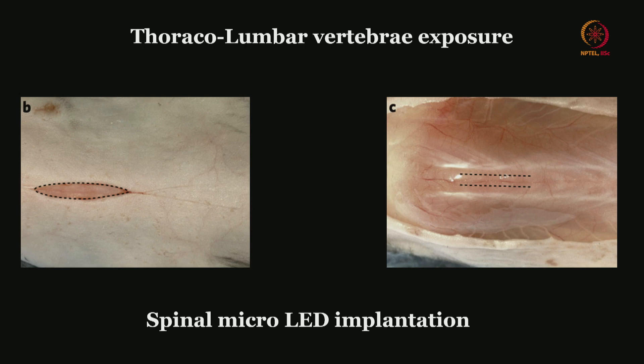Let us look at how micro LED implantation really happens. This is another important methodology commonly employed now, wherein you inject an adenovirus tagged to a fluorescent dye, which makes the nervous tissue express those fluorescent proteins. With the wavelength of the laser light the responses are seen — it stimulates something like optogenetic stimulation. This is the employment of optogenetic stimulation in the spinal model, and this is the LED implantation to bring about such a methodology.